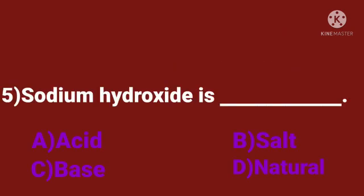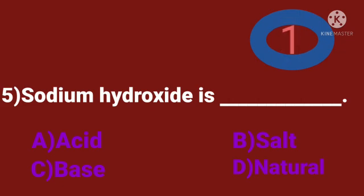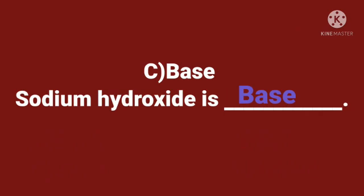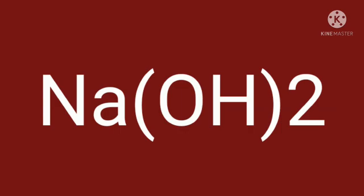Fifth question. Sodium hydroxide is dash. A. Acid. B. Salt. C. Base. D. Neutral. Time starts now. And the answer is base. Sodium hydroxide is a base. The formula of sodium hydroxide is NaOH.